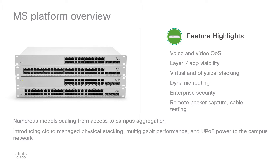Let's take a closer look at some of the other features included in the MS platform. Latency above 150 milliseconds is often unacceptable for supporting voice and video traffic. Cisco Meraki switches support Layer 2 and Layer 3 quality of service, ensuring these real-time traffic flows are given priority as they enter and traverse the network. Six queues with four QoS settings support flexible policy implementation.